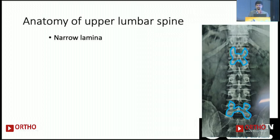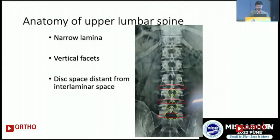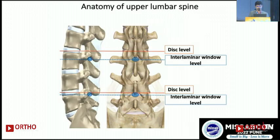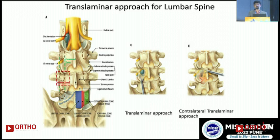The lamina is quite narrow in the upper lumbar region, so tackling disc herniations there is challenging — historically we used to fuse these pathologies in open surgery. The facets are quite vertical, so the chance of iatrogenic instability is high. The disc space is also quite distant from the interlaminar space, so the bony work required is considerably more.